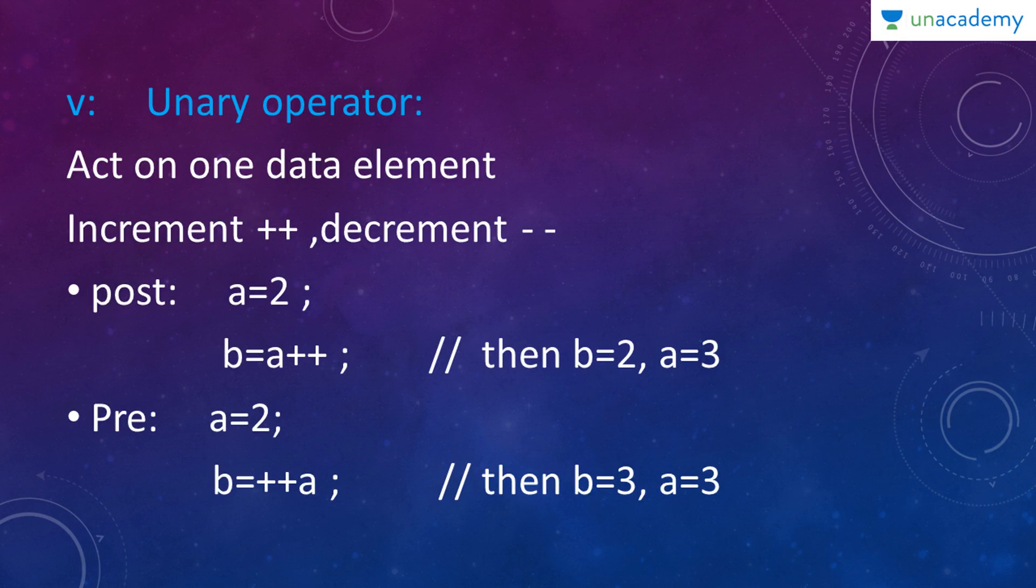Next type of operator is a unary operator which act on one data element which is an increment or a decrement. Here you have two types of increment or decrement. Either it can be post or pre. For example, we have a equals to 2. We have b equals to a plus plus which means first b is equal to 2 you'll get and then you'll get a equals to 3. That is, it is a post increment. You increment a after assigning it to b but there is pre increment as well. Here b equals to plus plus a. First you increment a and then assign it. Hence both the values are 3.